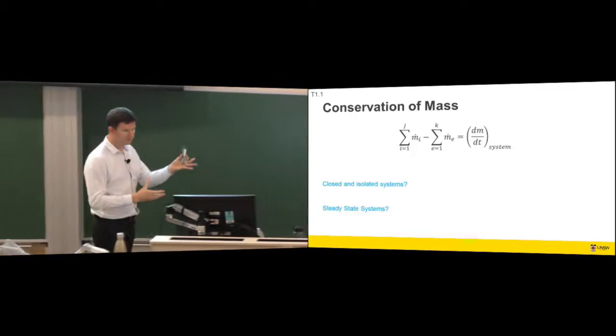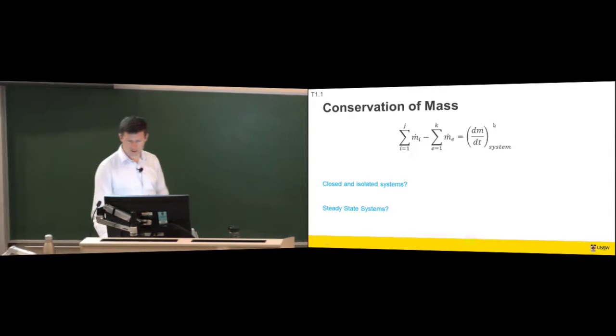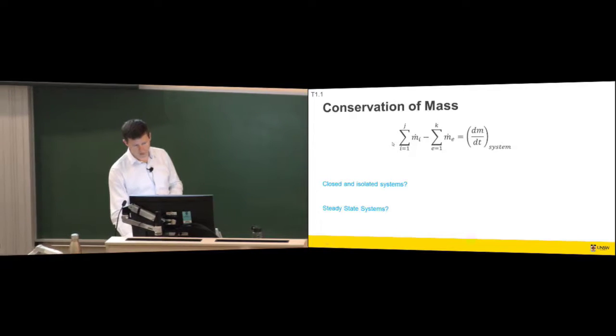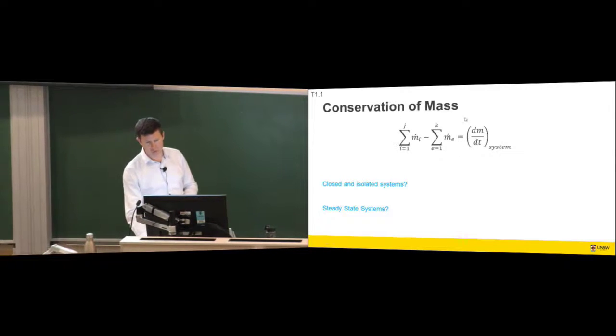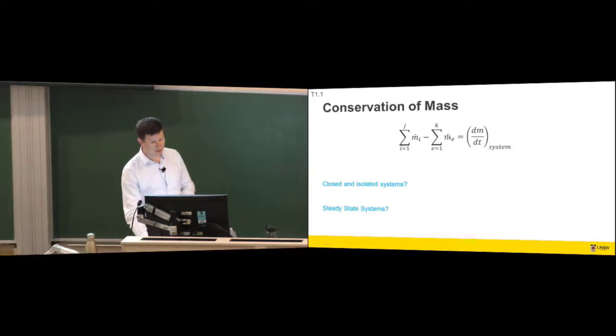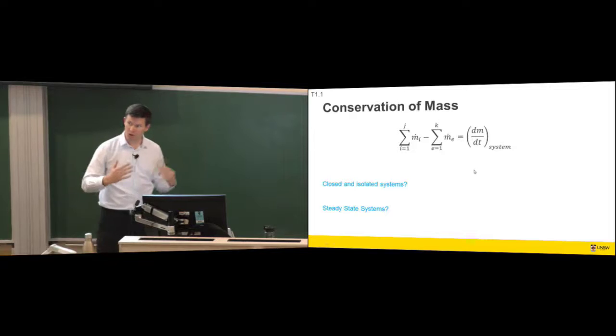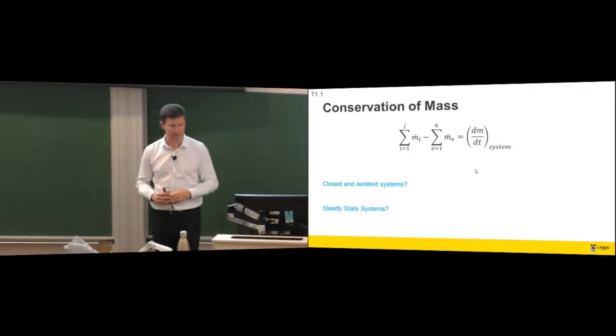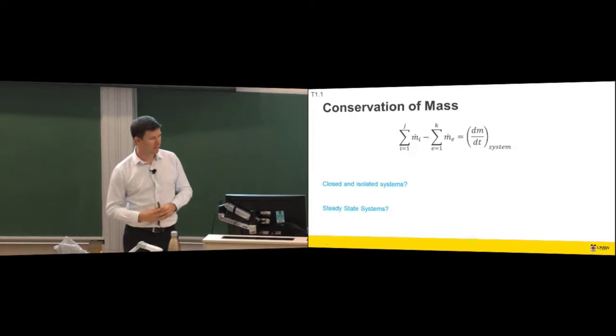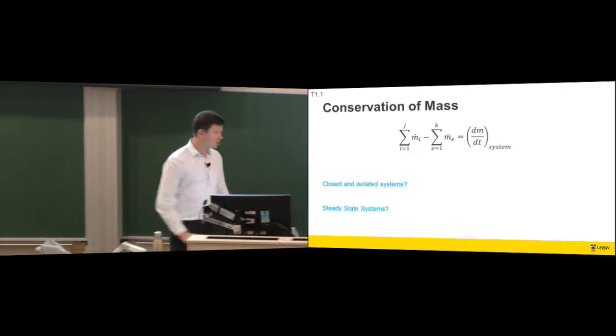In a steady state system, what can we simplify out of this equation? Change in mass becomes zero, excellent. Your change in mass with respect to time comes down to zero. Whatever your summation of inlets equals, you can take that minus sign out, throw it on the other side, equals the summation of the exits. Knowing you've got a system at steady state, and lots of systems become steady state over time, you can simplify that as well.